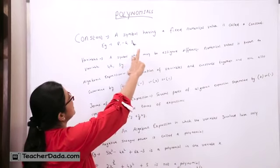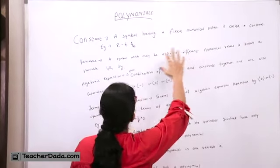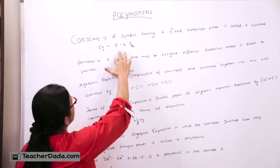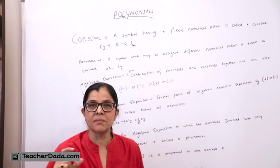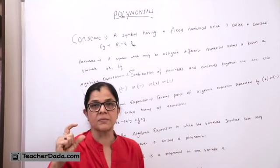First is constant. A symbol having a fixed numerical value is constant. For example, 8, -6, 5.4. In other words, these terms are constant, means only the numbers, the terms, and not the variable.